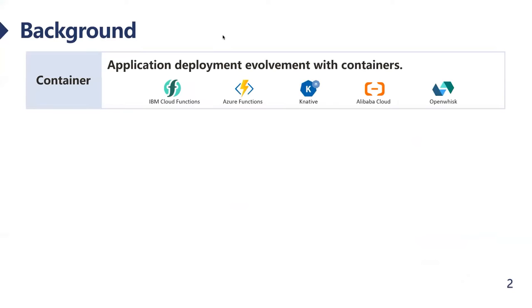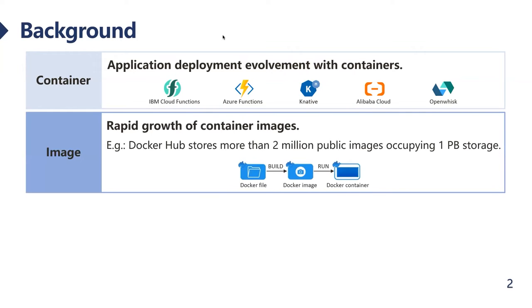I would like to begin with the background. Containers have emerged and revolutionized how web applications are deployed. They can be flexibly deployed on a specific node through delivering images. Therefore, images grow rapidly with the development of containers. For example, Docker Hub stores more than 2 million public images occupying roughly 1 petabyte of storage.